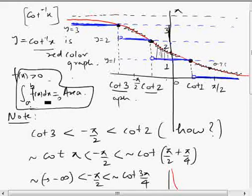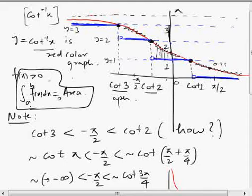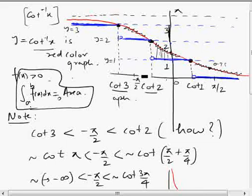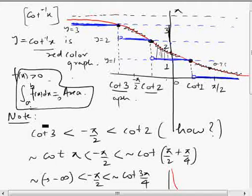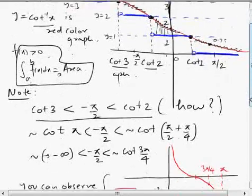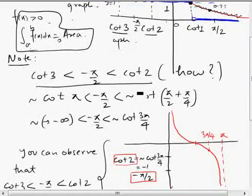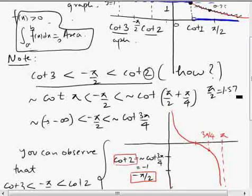So instead of finding the definite integral directly, we can find the bounded area — both are equal. The important thing at this stage is to identify where -π/2 lies on the graph. We can see that -π/2 lies between cot2 and cot3.